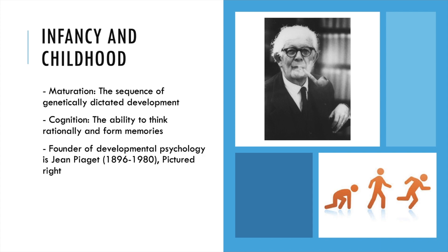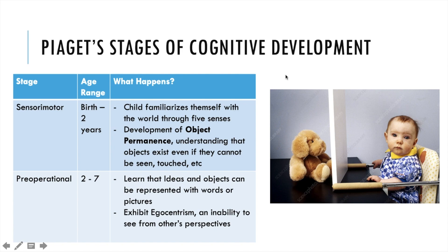We can't talk about childhood development without mentioning Jean Piaget, one of the titans of developmental psychology. Piaget studied how our minds develop for over 50 years and noticed stages to how children develop. From birth until age two, children are in the sensorimotor stage — experiencing the world through the five senses and learning the concept of object permanence, the idea that objects exist even when they cannot be seen or touched. A child might be upset thinking his toy has simply vanished from the earth, since he can no longer perceive it with his eyes.